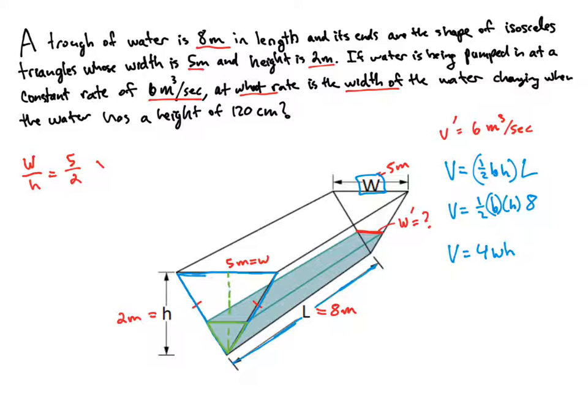So back over here, we have this proportion. And in this formula that we have for the volume, 4 times the width times the height, ultimately what we're trying to find is W prime. So if we can get our formula only in terms of W, V and W, we'll be in good shape. So let's solve our proportion for H.